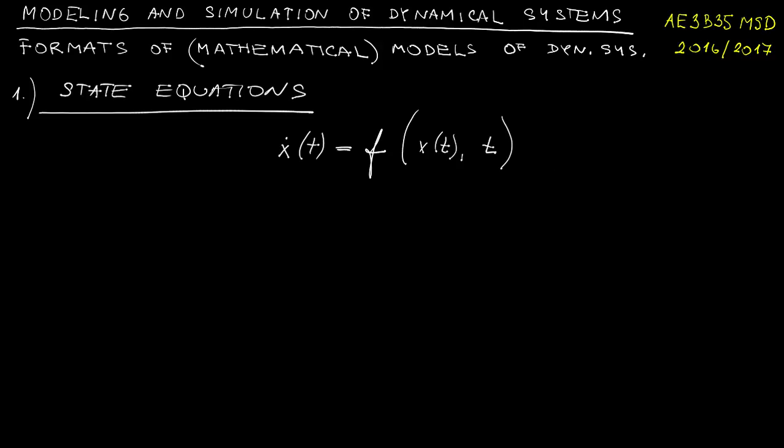Furthermore, this equation called the state equation is accompanied by the so-called initial conditions, that is the value of the state at some initial time. An example: x dot is equal to t times sine t, where x at 0 is say 5.